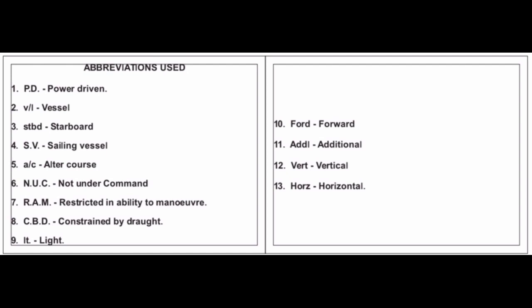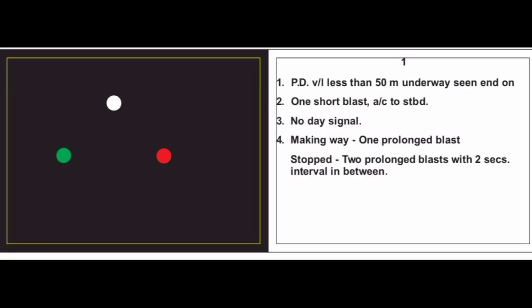These are the short forms you will come across when referring to your cards, so don't get confused. You must have a card with you, or else this video will be very helpful. This video will be in three parts — the first part covers cards 1 to 100. Before starting, make sure you know all the lights for each type of vessel. Let's begin with card number one.